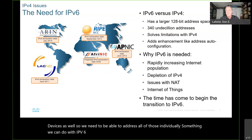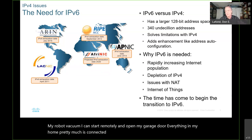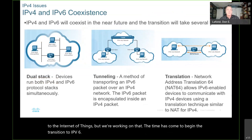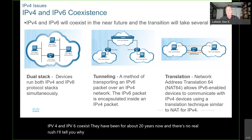Even my robot vacuum I can start remotely, and I can open my garage door. Everything in my home pretty much is connected — my toaster is not yet connected to the Internet of Things, but we're working on that. The time has come to begin the transition to IPv6. IPv4 and IPv6 coexist, and they have been for about 20 years now. There's no real rush to IPv6, but it will happen naturally.